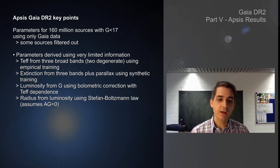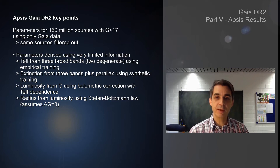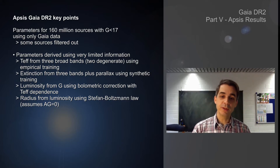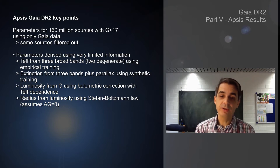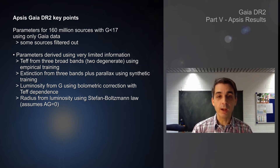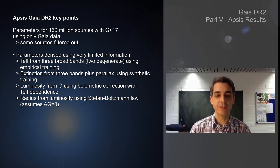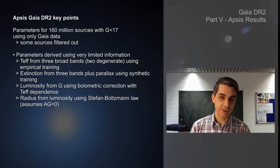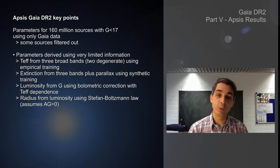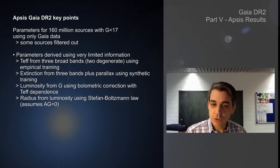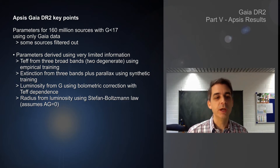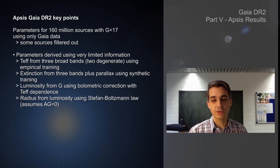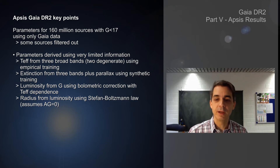The other two parameters we report are luminosity and radius. Luminosity comes quite simply using the apparent magnitude, the parallax, and a bolometric correction derived using the temperatures we derive. But when we do this, we actually assume zero extinction. So it's important to realize the luminosities reported assume zero extinction, not the extinction we report. You can easily adjust the reported luminosity using any extinction you think is better. The radius comes from the luminosity and temperature using the Stefan-Boltzmann law, again assuming zero extinction.